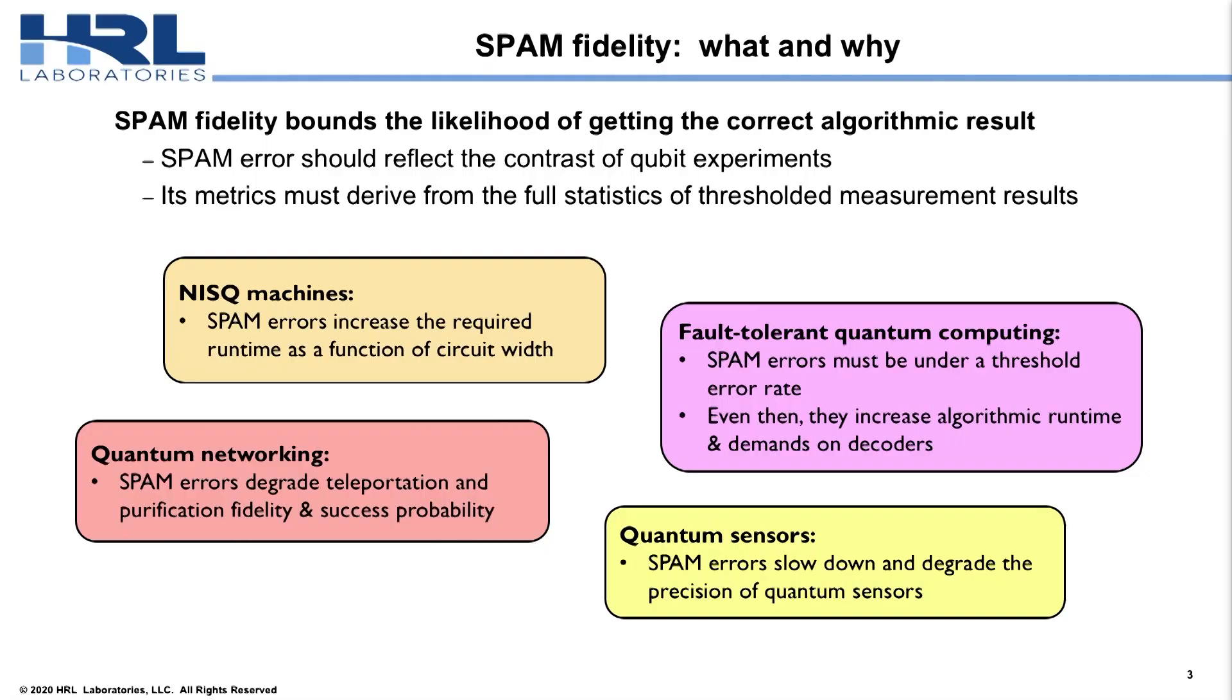My other intro slide is talking a little bit about spam fidelity. So, what do I mean when I talk about spam fidelity? Preparation and measurement are what bound the probability of your algorithm working when sort of everything else, your CNOTs, your Cliffords, whatever, goes right. And what that means is that when we want to talk about a quoted spam error, it really needs to come from qubit measurements. In particular, it has to come from the full statistics of thresholded measurements, which means we need to be very careful when we're talking about post-selection. And generally, things like SNR aren't particularly good proxies for spam fidelity.